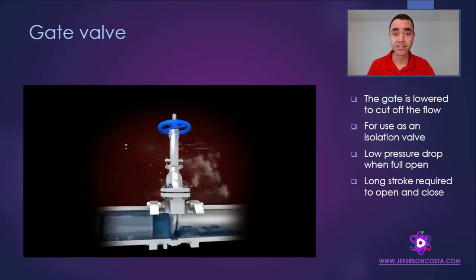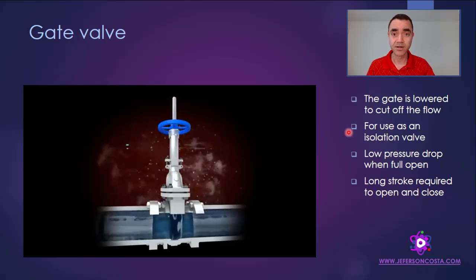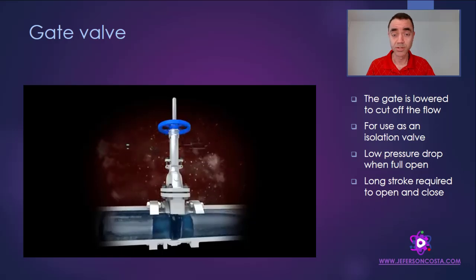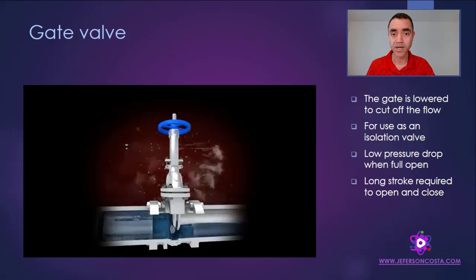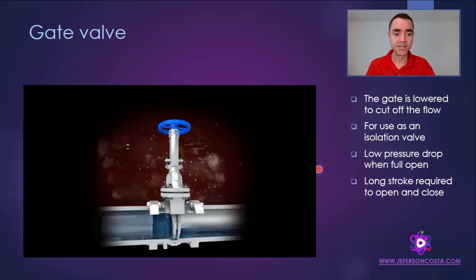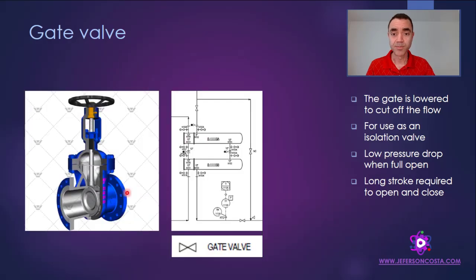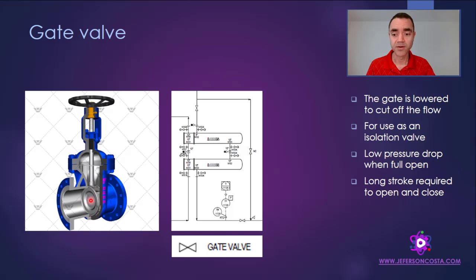A gate valve is one of the most used valves for isolation of equipment and systems. In its construction, it has a disc that goes up or down to isolate the fluid. This valve is most often used for isolation because of its construction, and it is cheaper than other valves depending on size. There is a very low pressure drop when fully open, because the orifice of this valve matches the pipe size — when the valve is fully open, the disc retracts into a compartment, making the full bore of the pipeline available for fluid flow.